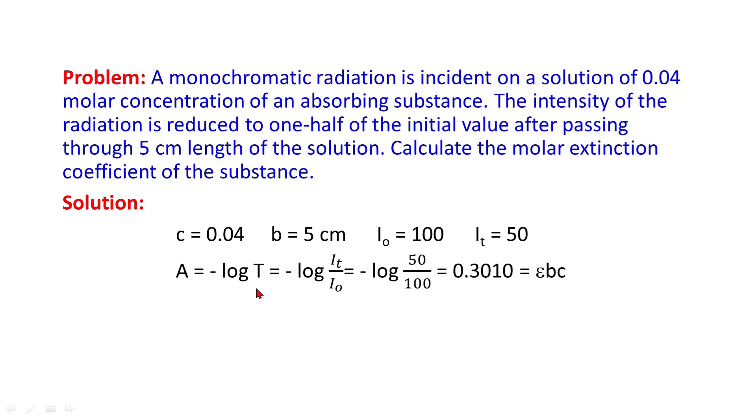Since A is equal to negative log T, we can put the value of It and I₀. The value comes out to be 0.3010 which is equal to εbc. From here we can calculate the value of epsilon which comes out to be 1.505 dm³ per mole per centimeter.